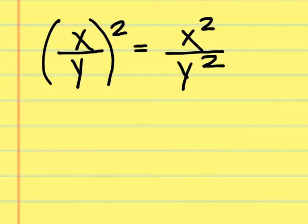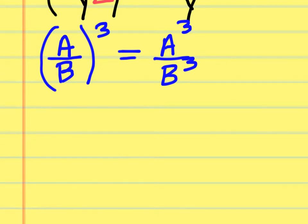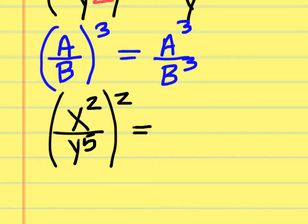Rule 3: when you have a quantity raised to an exponent — such as a fraction in parentheses — that exponent acts on each item inside the parentheses. So (x/y) squared gives x squared over y squared, and (a/b) to the third gives a to the third over b to the third. Even if variables already have exponents, like (x squared over y to the fifth) squared, you distribute the outer exponent to each term, giving x to the fourth over y to the tenth.